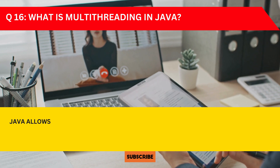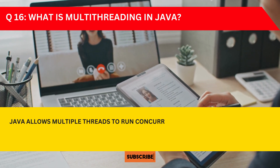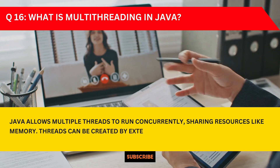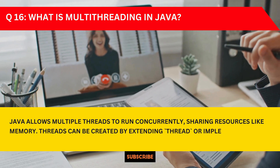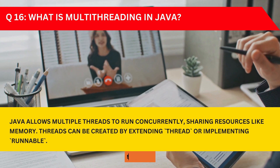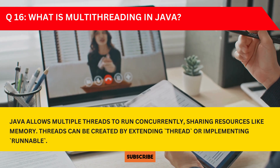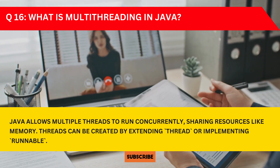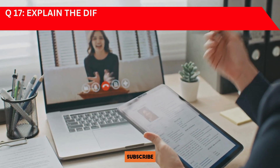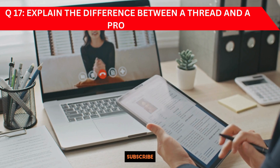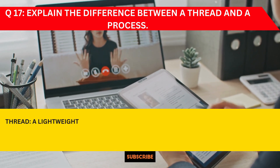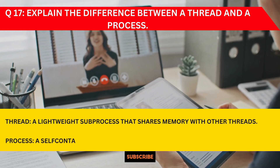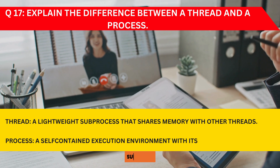Question 16: What is multi-threading in Java? Java allows multiple threads to run concurrently, sharing resources like memory. Threads can be created by extending Thread or implementing Runnable. You can also mention examples from your present role or academic projects. Question 17: What is the difference between a thread and a process? A thread is a lightweight sub-process that shares memory with other threads, whereas a process is a self-contained execution environment with its own memory space.